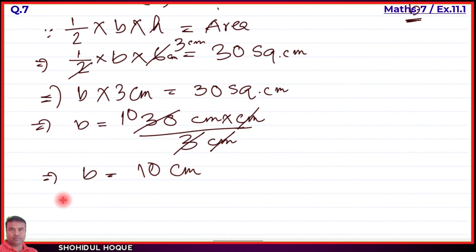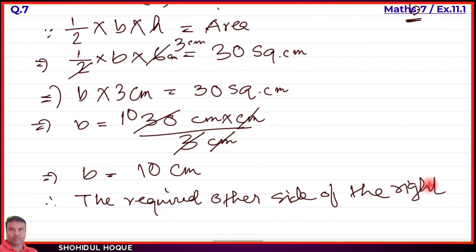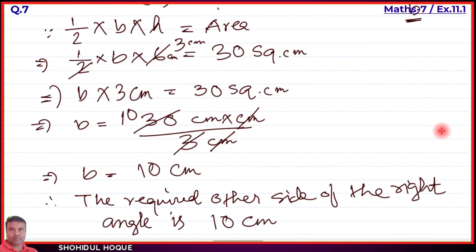Therefore, B equals 10 centimeters. So the required other side of the right angle is 10 centimeters.